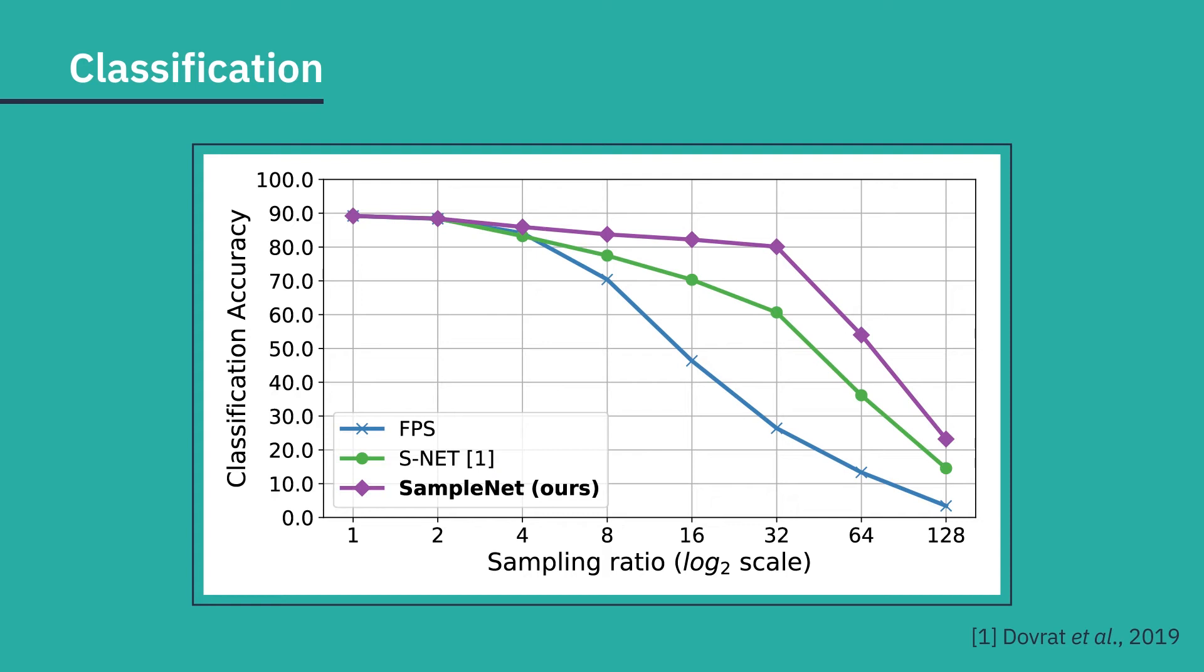The x-axis is the sampling ratio in log2 scale, and the y-axis is the accuracy percentage. SampleNet outperforms the other methods by a large margin.